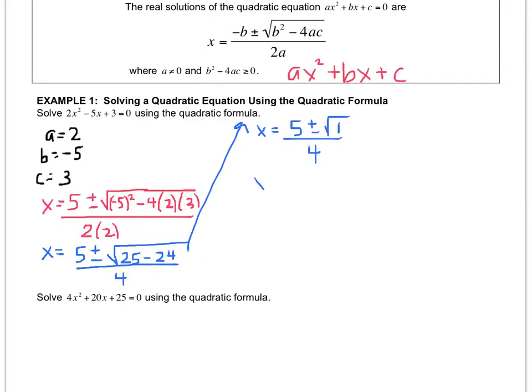So that becomes 5 ± 1 over 4. In the past, I always would make you write positive 1 and negative 1, but that's what these symbols take into consideration—that the symbol could be positive or negative. You don't have to do it both ways because that's what this plus or minus does.